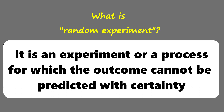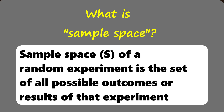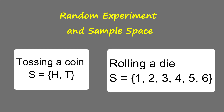What is a random experiment? It is an experiment or a process for which the outcome cannot be predicted with certainty. What is sample space? The sample space S of a random experiment is the set of all possible outcomes or results of that experiment. In this slide, we have two examples of random experiments — tossing a coin and rolling a die — together with their sample spaces.